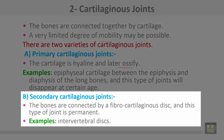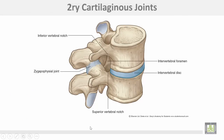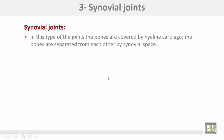The second variety is secondary cartilaginous joints, where bones are connected by a fibrocartilaginous disc. This type of joint is permanent. Examples include the intervertebral discs and the bodies of the vertebrae, which form secondary cartilaginous joints.